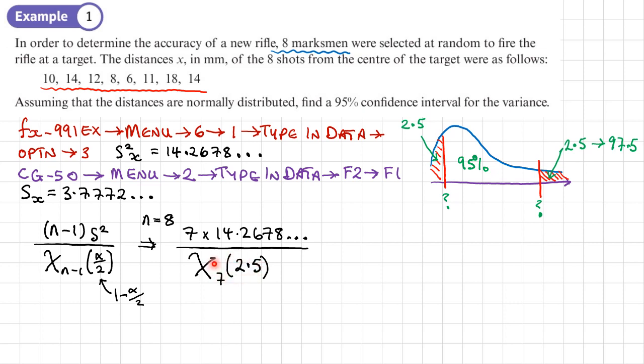We can either use the percentage points table to find this value, or we can use our CG50. You'll need to go to distribution, chi or C-H-I, and you want inverse C, because we know the area, we want to find the value on the chi-squared distribution. If I do that with 7 degrees of freedom from the CG50, I get a value of 16.01276. From the percentage points table, you'll get 16.013.